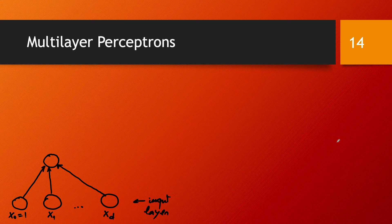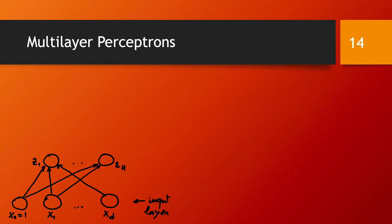We would have more than just one neuron — this would be just the first one. In fact, we would have quite a number of such neurons, say H such neurons. Each one of them is connected to the input layer and implements its own computation, meaning it has its own specific set of weights.